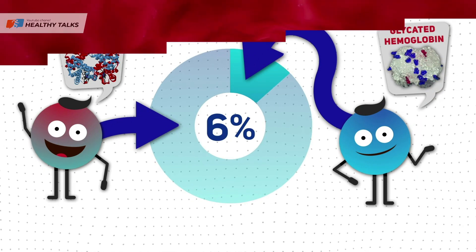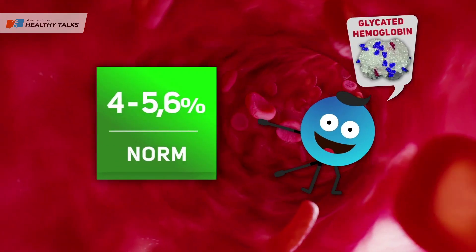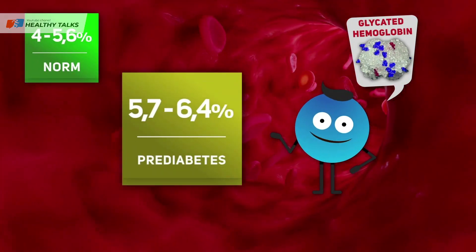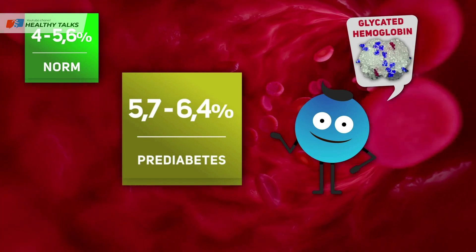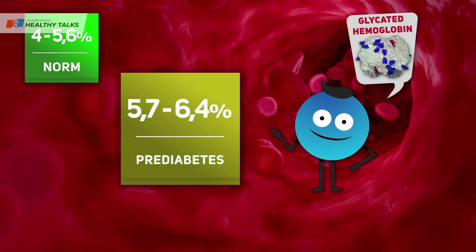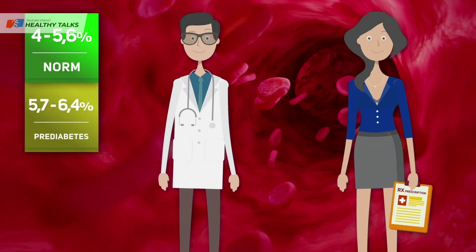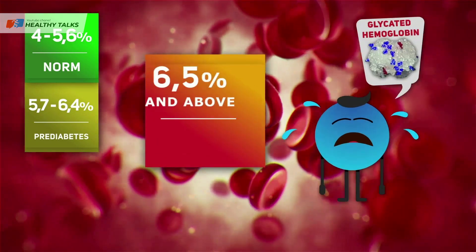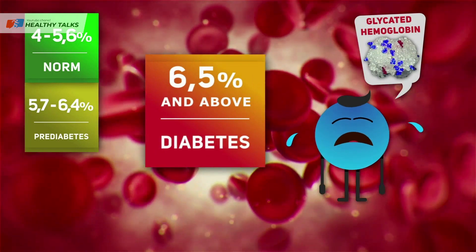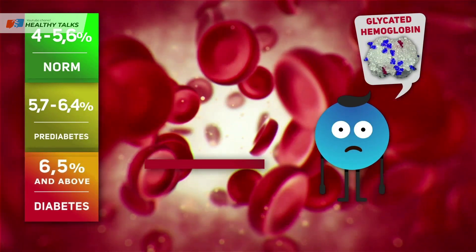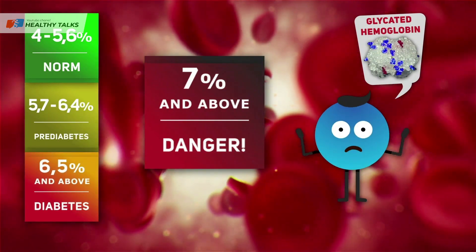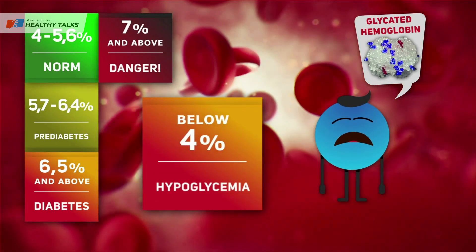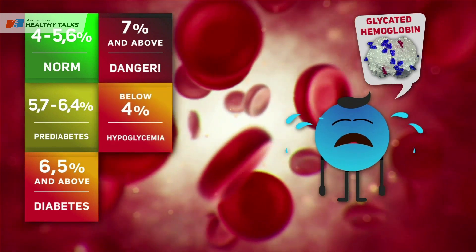A result of 4% to 5.6% is considered normal. A result between 5.7% and 6.4% indicates pre-diabetes; at this stage, with the proper approach of a doctor and lifestyle adjustments, sugar can be lowered. A result of 6.5% or higher indicates the presence of diabetes mellitus. A result above 7% is considered dangerous. A glycohemoglobin level below 4% indicates hypoglycemia, that is, reduced glucose levels.